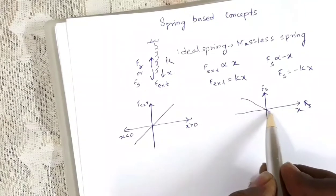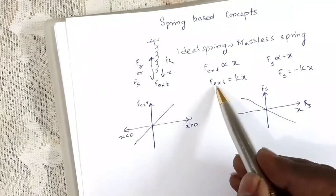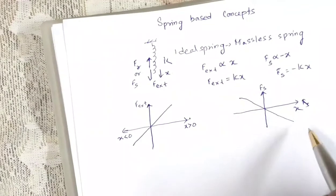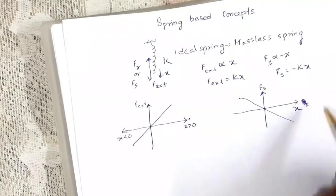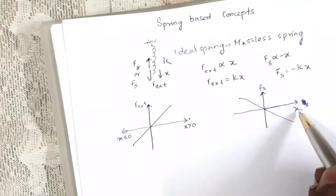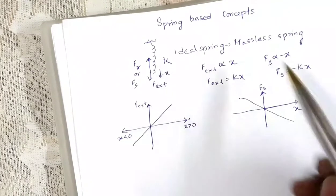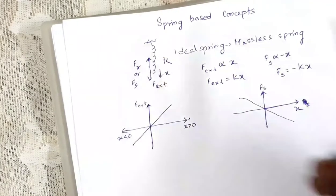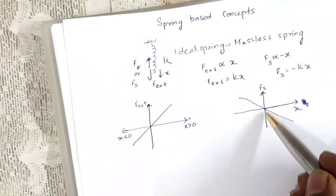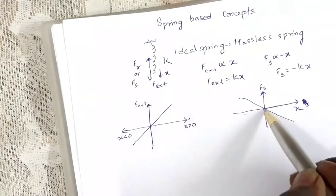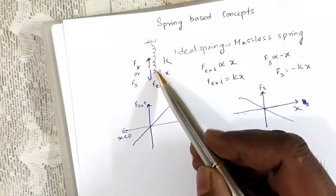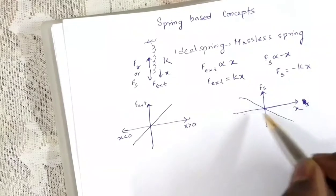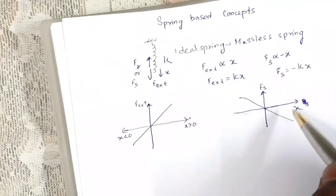Similarly, if I draw a graph between spring force and extension or compression, we get a graph with a negative slope. For the external force graph the slope is k, and for the spring force graph the slope is -k. When x is positive (spring extended), the restoring force is negative (acts upward). When x is negative (spring compressed upward), the restoring force is positive (acts downward).